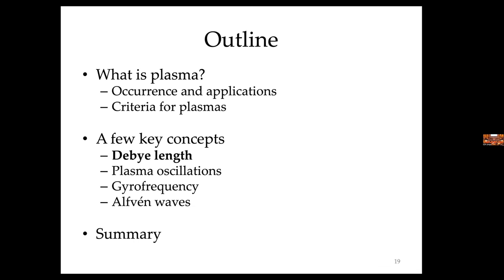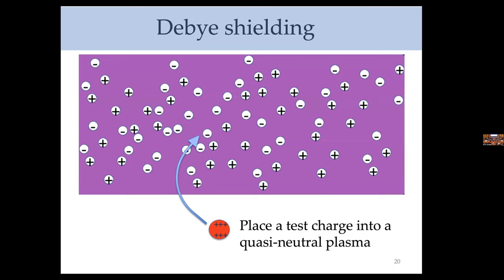The first key concept is the Debye length. Picture a plasma in a container — a soup of charged particles, positive and negative — they are free, not bound to an atom or a lattice. Now, what happens if you place a test charge from outside into the container? I'll arbitrarily choose it to be positive, but the principle is the same for negative. When you place it there, what happens?